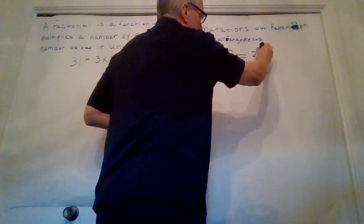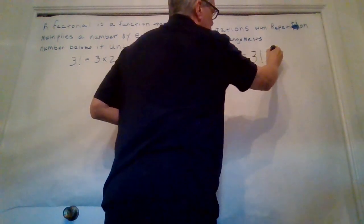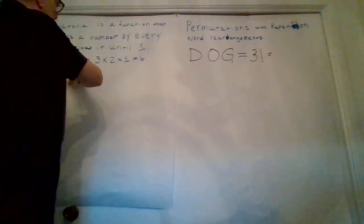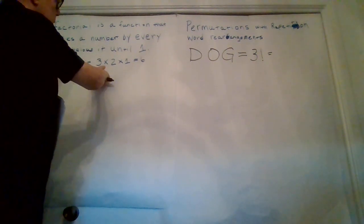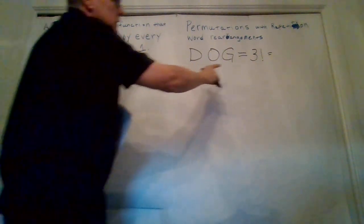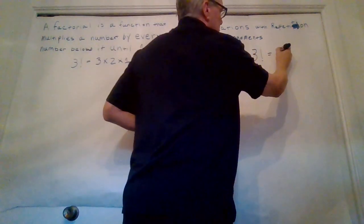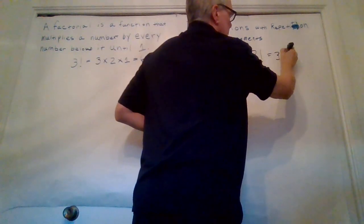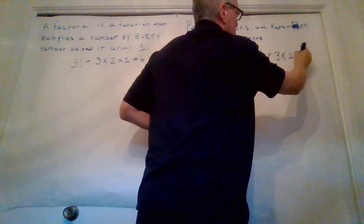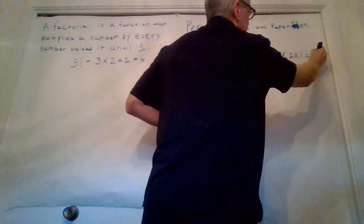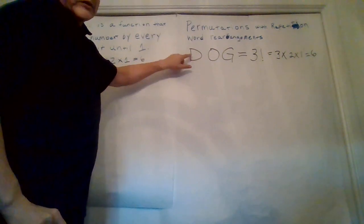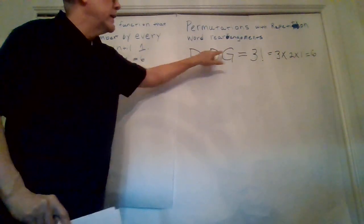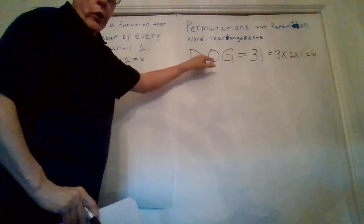And we're going to use our factorial that we look at over here. So our factorial is 3. Factorial is 3 times 2 times 1 equals 6. So we know this is going to be 3 times 2 times 1, which equals 6. So 6 tells me that there are six different ways I can rearrange the letters in the word dog.